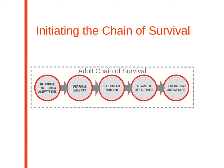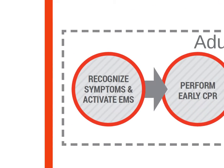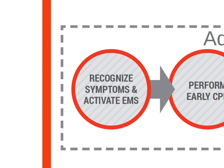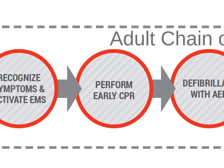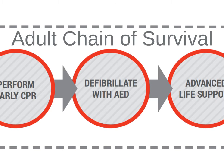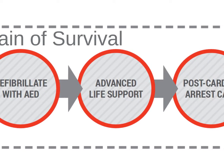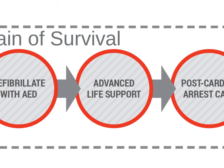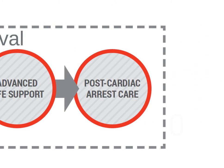The AHA first emphasizes initiating the chain of survival as early as possible. The first step of the adult chain of survival is to recognize symptoms and call 911. Next, perform CPR. Then locate and activate the AED. Once you have activated the AED, the EMS team will perform advanced life support. After the patient is stable and has been taken to the hospital, they will receive post-cardiac arrest care.